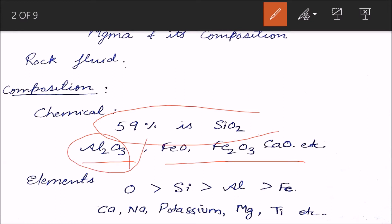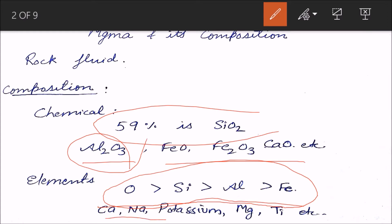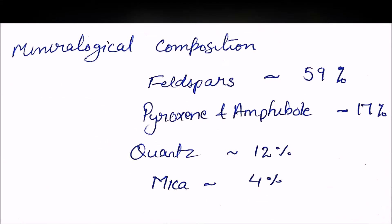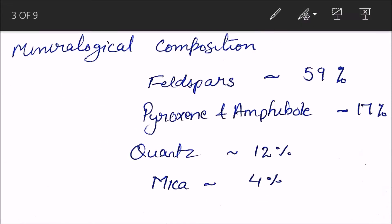In elemental form, oxygen is the highest, then silicon, then aluminum, then iron. You have to remember this. There is also presence of calcium, sodium, potassium, magnesium, titanium, etc., but oxygen is the highest, then silicon, then aluminum. This is important to remember.